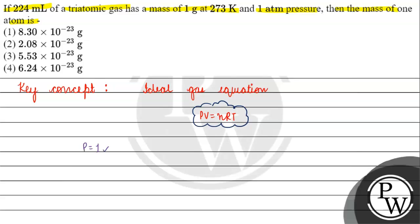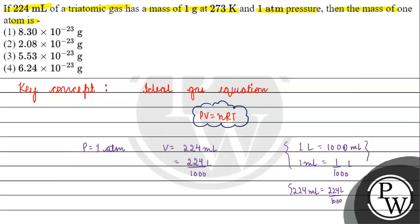From the question, pressure is given as 1 atm. Volume is given as 224 ml — converting to liters that gives us 224 by 1000 liters, since 1 liter = 1000 ml. R is 0.082 liter·atm per kelvin per mol, and temperature is given as 273 kelvin.